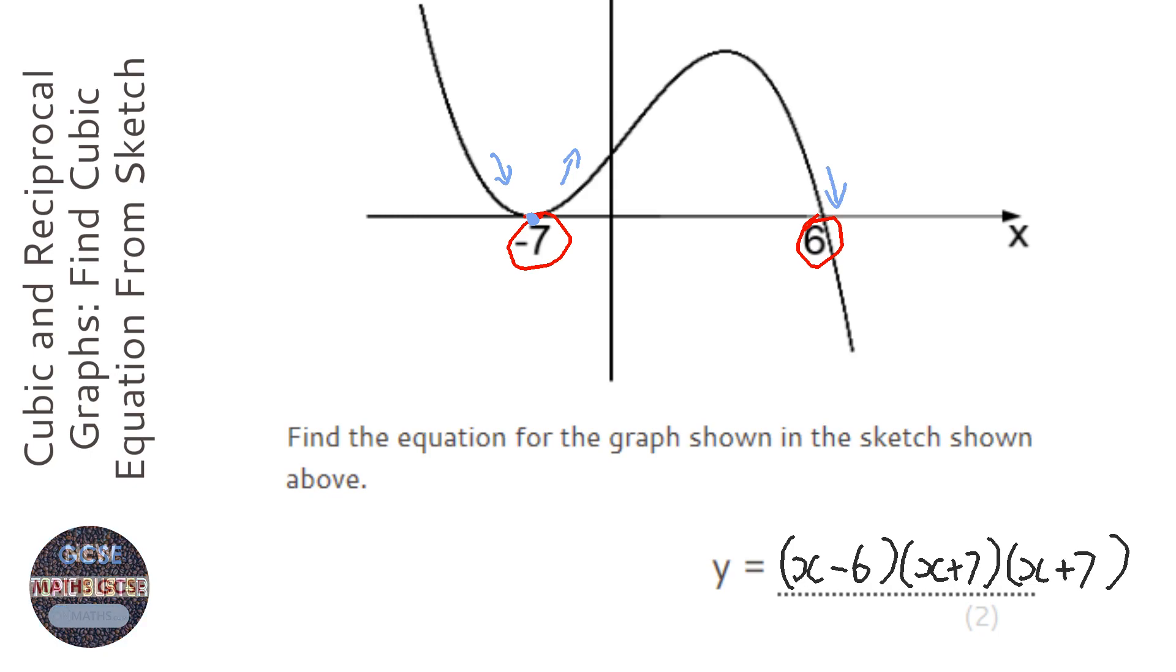So there are two lots of x plus 7. So a bit of a unique situation that, but it's useful to remember.